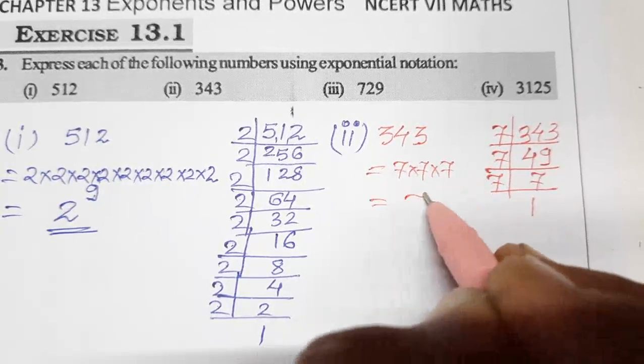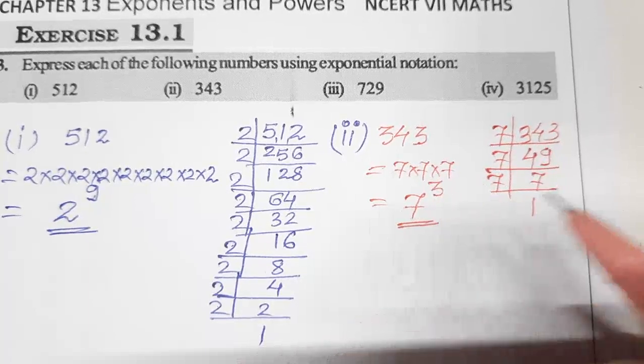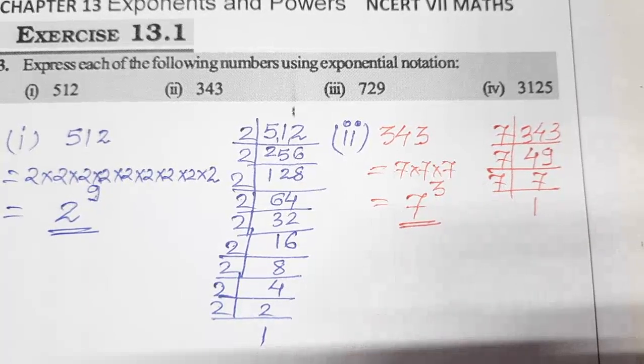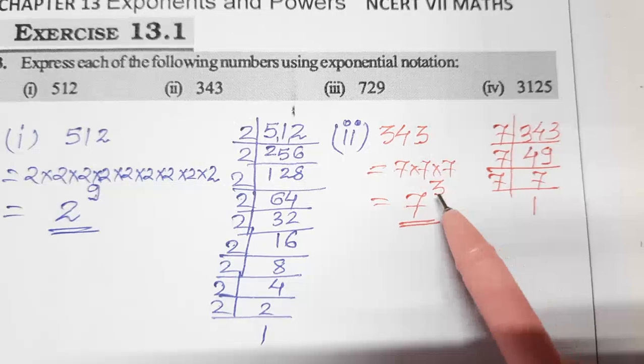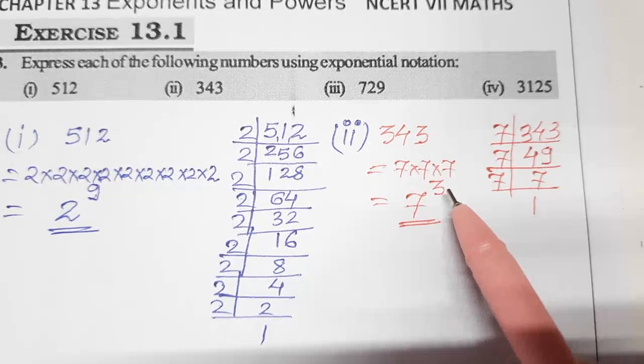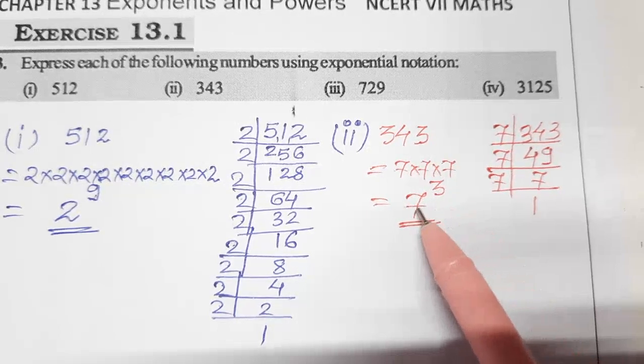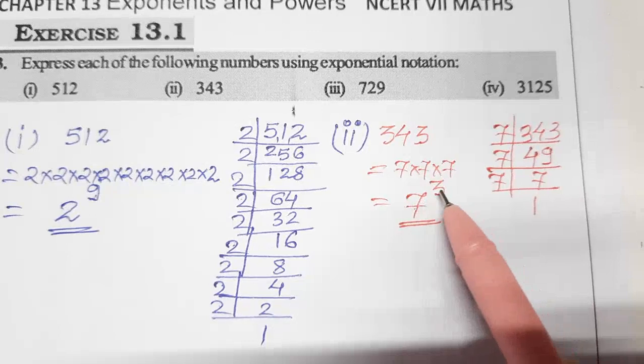That means 343 can be written as 7 into 7 into 7, that means 7 three times. So 7 raised to the power 3, yeh exponential notation mein ho gya. Exponential, yeh power bolte hai, exponents bolte hai. So 7 ki power 3, yeh 7 raised to the power 3 ho gya.